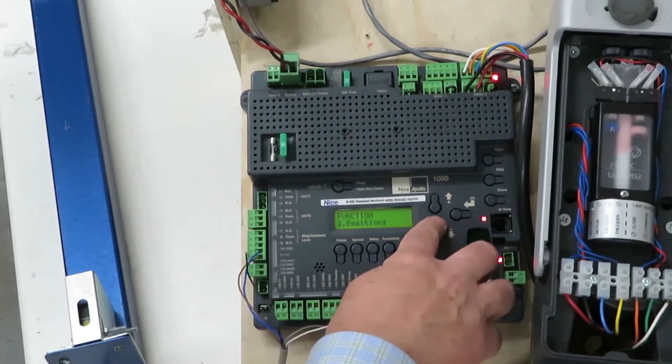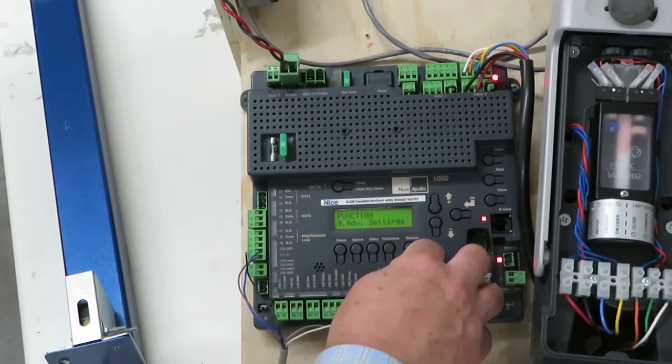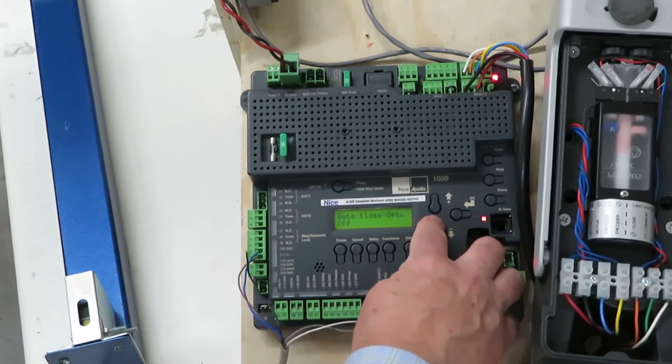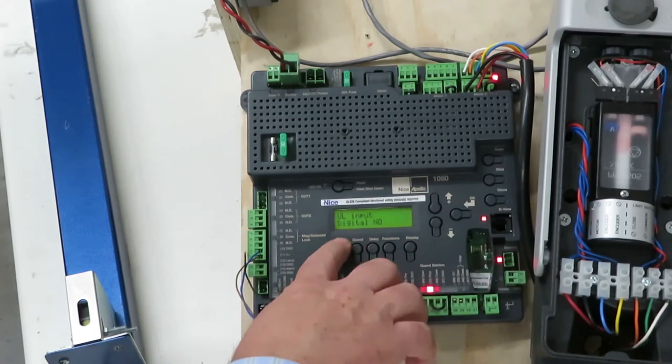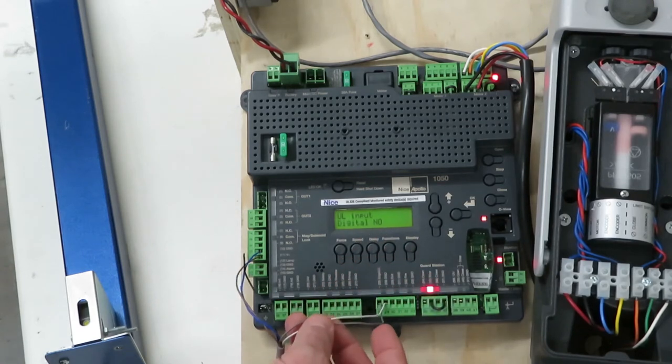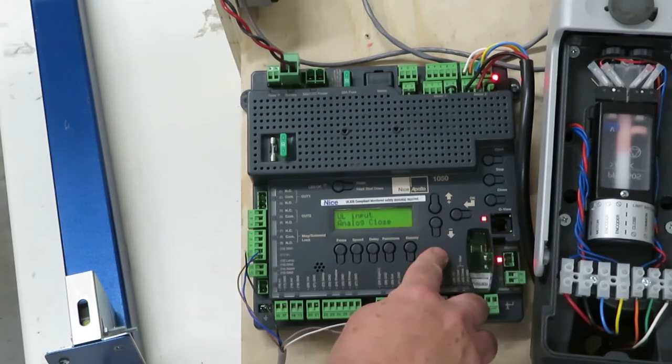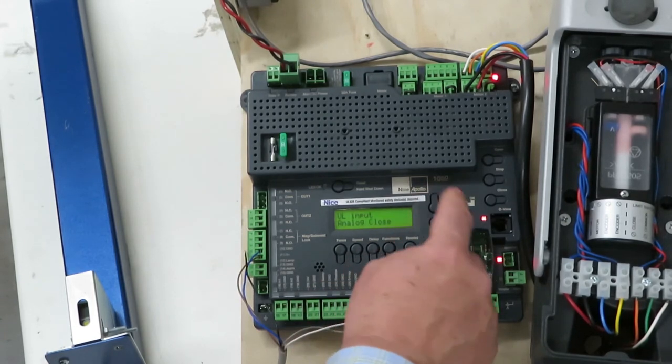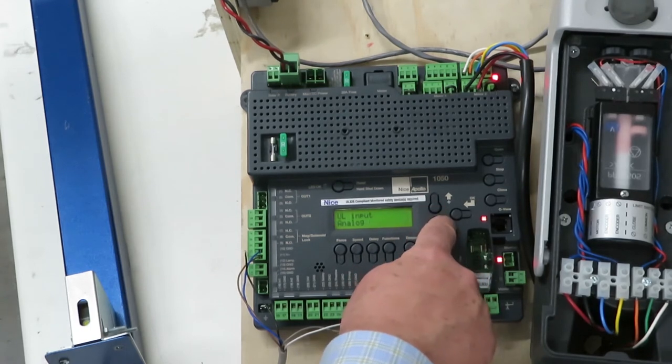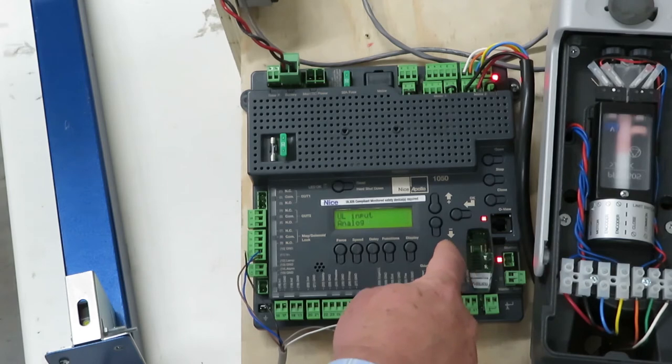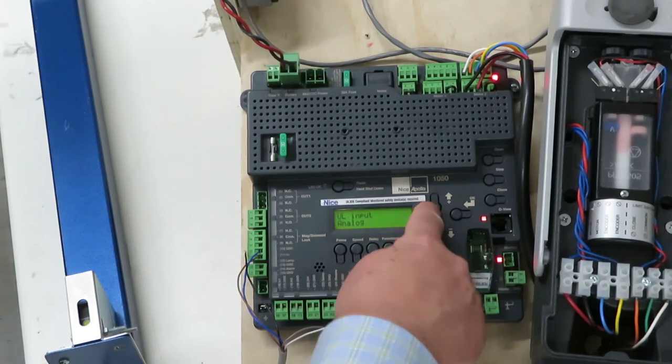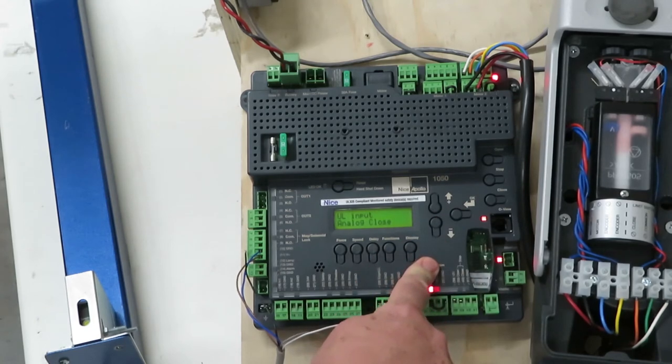Now I'm going to go in and set the UL input to have the right kind of input. So to do that, I'm going to hit functions, scroll down to advanced. Okay. Then I'm going to scroll down until I see UL. There it is. And hit okay. So right now it's set up for digital normally open. Since this is 10k monitored input, we want to set it up for analog. So change digital to analog and hit okay. Then we've got our choices of close. So it controls it on the close direction. Open. So it controls it on the open direction or both. So both you would use for like a wraparound edge on a swing gate. If you had an entrapment problem in the open direction, you would use open. This is to protect the gate in the closed direction. So we're going to set it to close. That's what we want. Hit okay. And that's all we need to do.